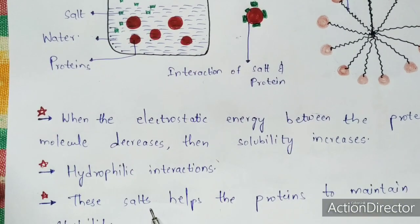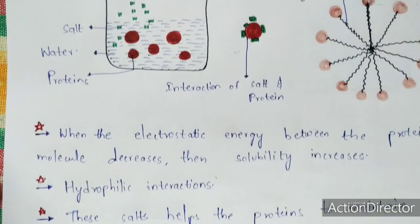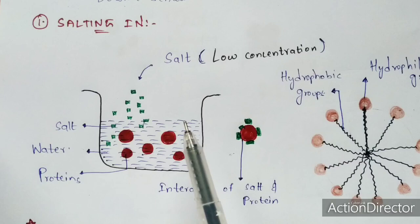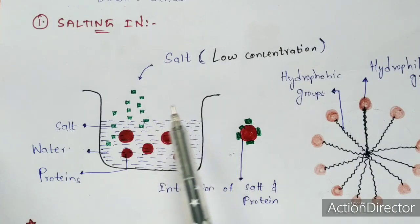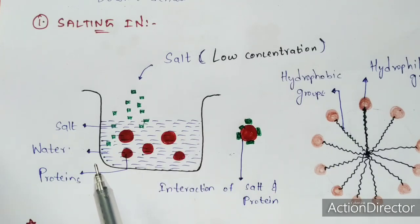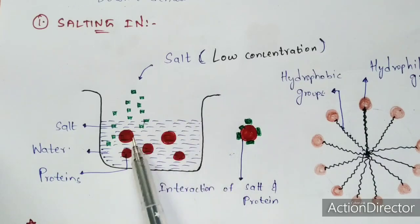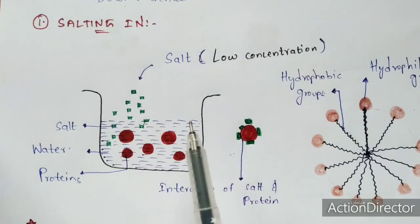When salt is added in low concentration, it helps the protein to maintain stability. A small doubt may arise: when salt is added to water, why does the salt interact towards the proteins rather than the water molecules? The reason is that the electrostatic energy between the proteins is very low, hence the salt gets attracted towards the proteins rather than the water molecules. So that is the salting in process.